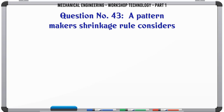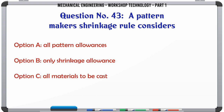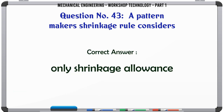A pattern maker's shrinkage rule considers: A. All pattern allowances. B. Only shrinkage allowance. C. All materials to be cast. D. All materials of the pattern. The correct answer is: Only shrinkage allowance.